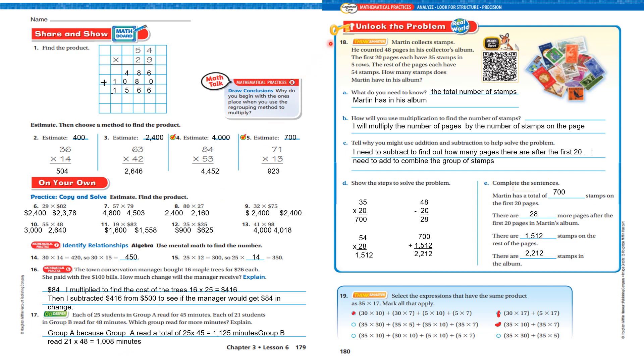Let's look at number 18, unlock the problem. Martin collected stamps. He counted 48 pages in his collector's album. The first 20 pages each have 35 stamps in five rows. The rest of the pages each have 54 stamps. How many stamps does Martin have in his album? What do you need to know? You need to know the total number of stamps Martin has in his album. How will you use multiplication? I'll multiply the number of pages by the number of stamps on the page. Tell why you might use addition and subtraction. I need subtraction to find how many pages there are after the first 20, and I need to add to combine the groups of stamps.